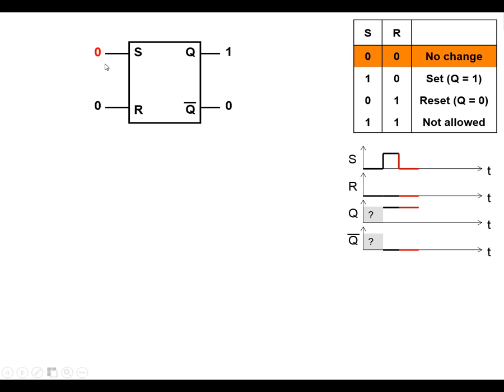I'm going to make S go low. This is known as the no-change state. Q stays high, Q-bar stays low.